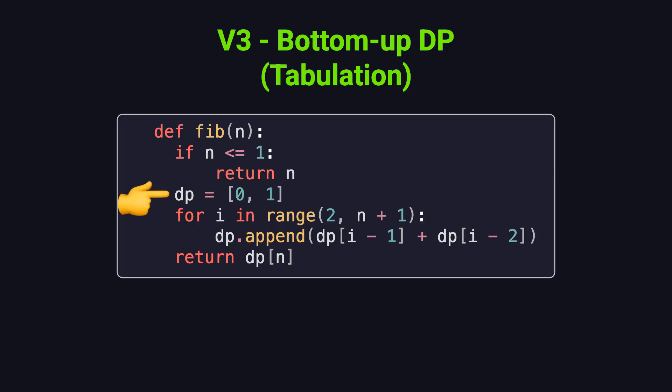To do this, we use an array, often called dp, to store the intermediate results. This way, there's no recursion involved at all. The time complexity is still O(n), but since we've eliminated the overhead of recursive calls, the code runs even faster.